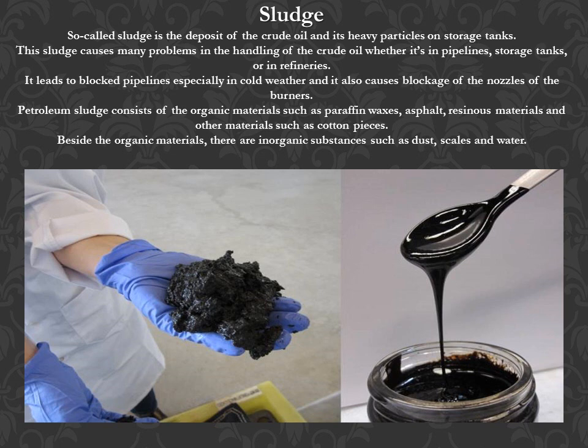It also causes blockage of the nozzles of the burners. Petroleum sludge consists of organic materials such as paraffin waxes, asphalt, resinous materials, and other materials such as cotton pieces. Beside the organic materials, there are inorganic substances such as dust, scales, and water.